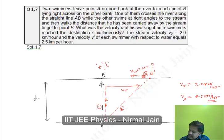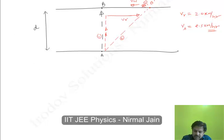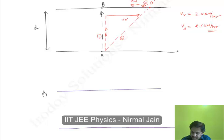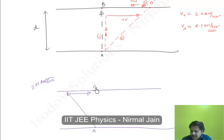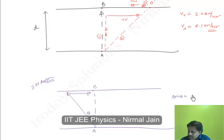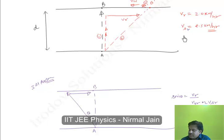Let us analyze both persons separately. For the first person: he starts from point A and reaches point B. He must move at an angle upstream so that the river drift is zero — that is, his resultant velocity is directed straight across. The condition for zero drift is sin θ = Vr / Vsr, where Vr is the river velocity and Vsr is the swimmer's velocity with respect to the river.